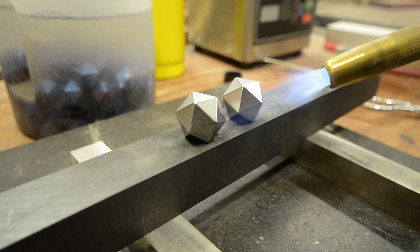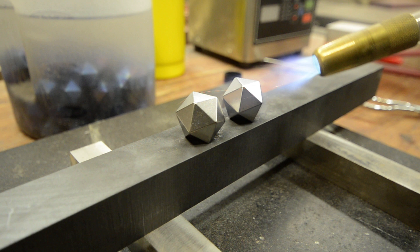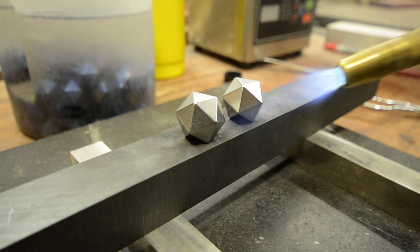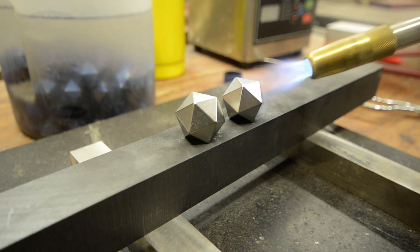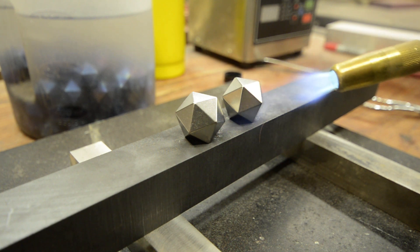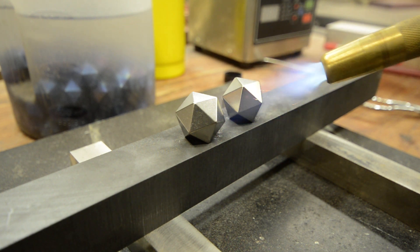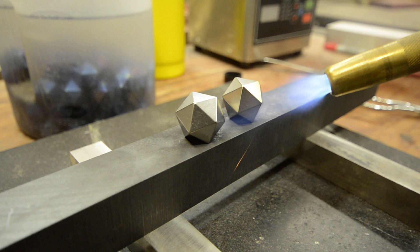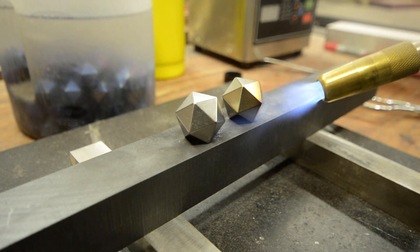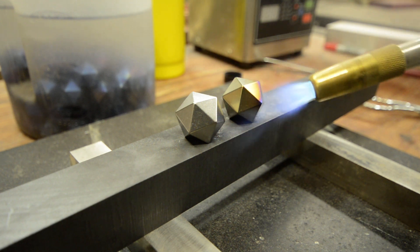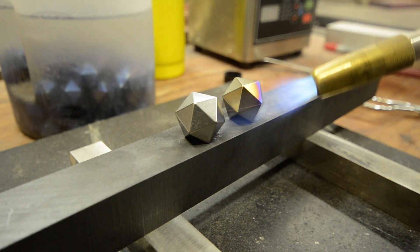So we just start slowly building the heat up in the dice. Once it starts to absorb the heat, the colors come on pretty quickly though. What we're doing by heat anodizing is growing a thin crystalline oxide layer as the first surface of the material.